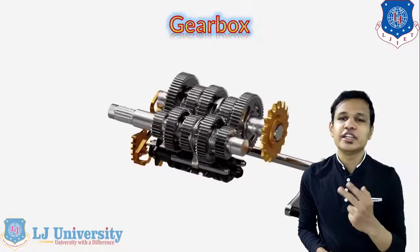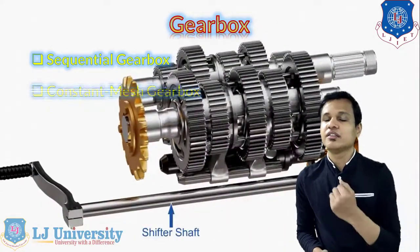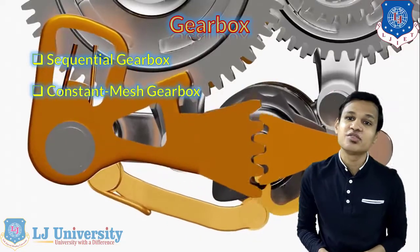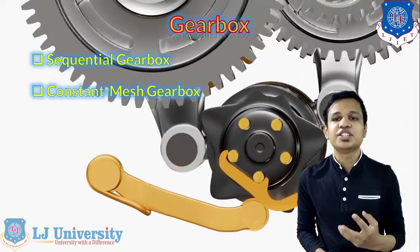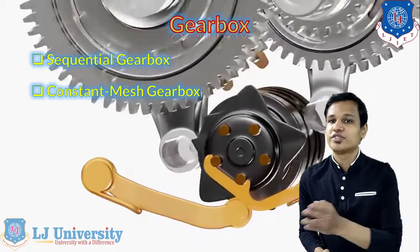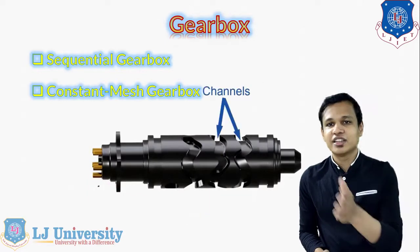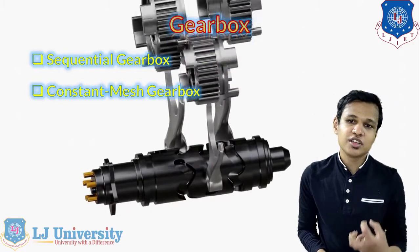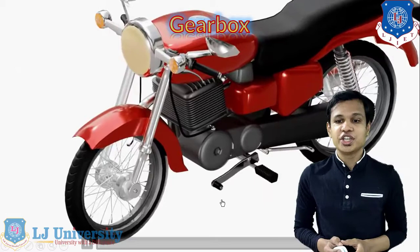Next we will see about the gearbox. In the case of the gearbox, there are mainly two types used in two-wheeler engines: the first is the sequential gearbox and the second is the constant mesh gearbox. Both gearboxes are essentially the same; only the operating mechanism is different. In the sequential gearbox, gears can only be shifted in sequence — from neutral to first, first to second (passing through neutral), and so on. In the constant mesh gearbox, you can directly shift from first to second gear without going through neutral.